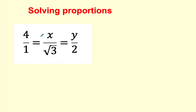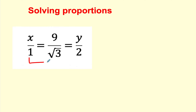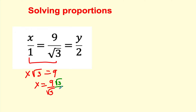This is called an extended proportion. I'm going to solve this one first, so I'm going to cross multiply. That'll be 4√3, and then that'll be x. So I found my x. Now to figure out y, I'm going to use these two right here. I'm going to cross multiply, and that'll be 8 is equal to y. Now I'm going to multiply the numerator and denominator by √3, and this is going to be equal to 9√3 over 3.